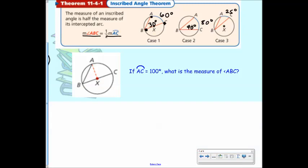If arc AC is 100, what's the measure of ABC? Arc AC is 100 degrees. What's the measure of ABC? 50. 50. Yep.